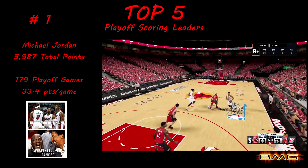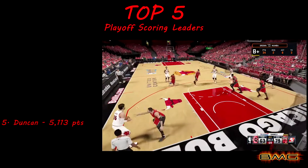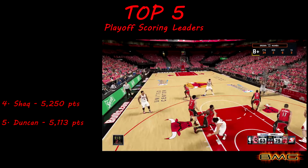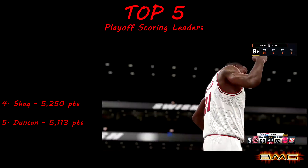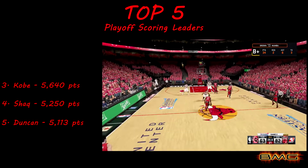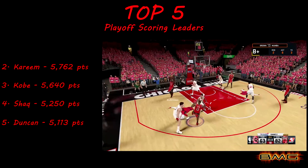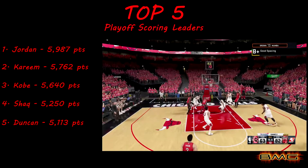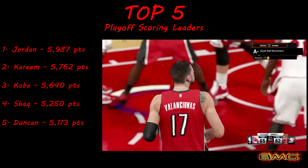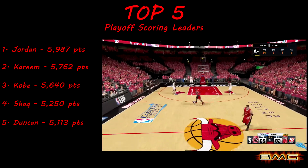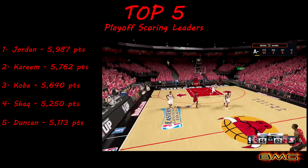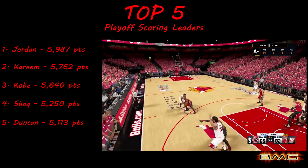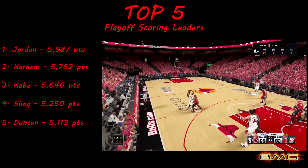To recap: number five was Tim Duncan with 5,113 points; number four was Shaq with 5,250 points; number three was Kobe Bryant with 5,640 points; number two was Kareem Abdul-Jabbar with 5,762 points; and number one is Michael Jordan with 5,987 points. These top five guys are amazing — they've all won multiple championships and are some of the best players to ever play the game. I hope you guys enjoyed this video on total points scored in the playoffs. Please like and subscribe, and I'll catch you in the next one.